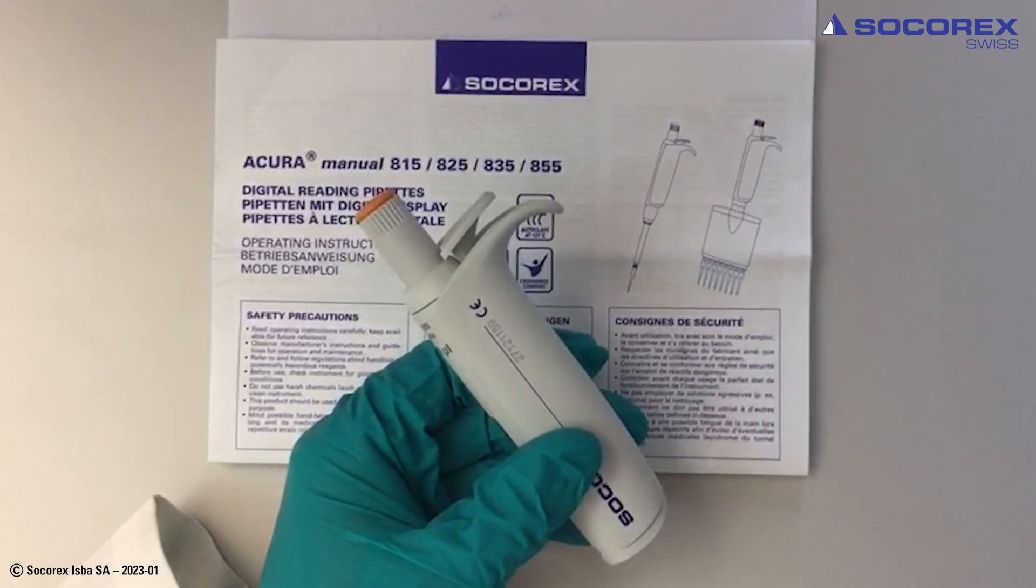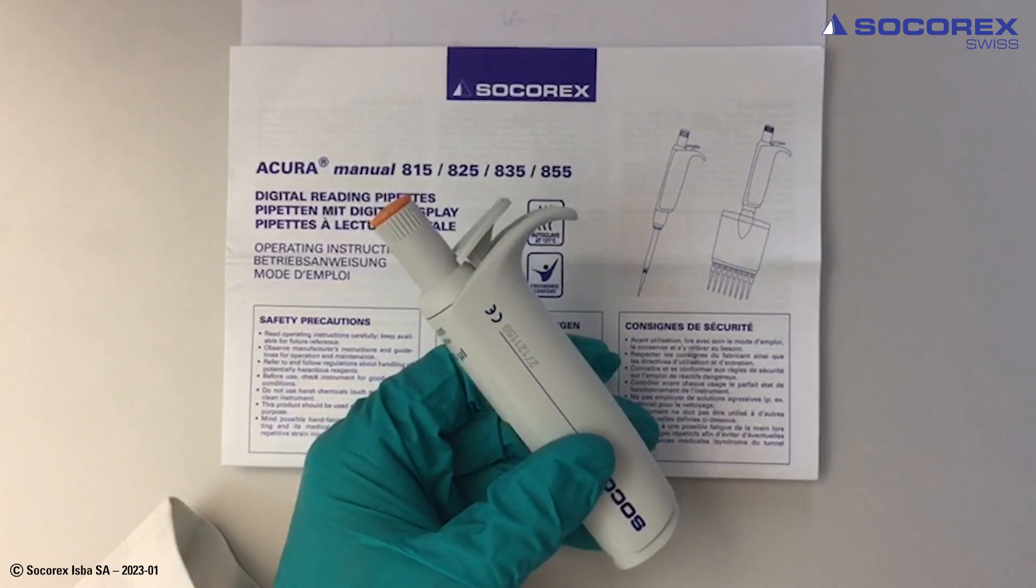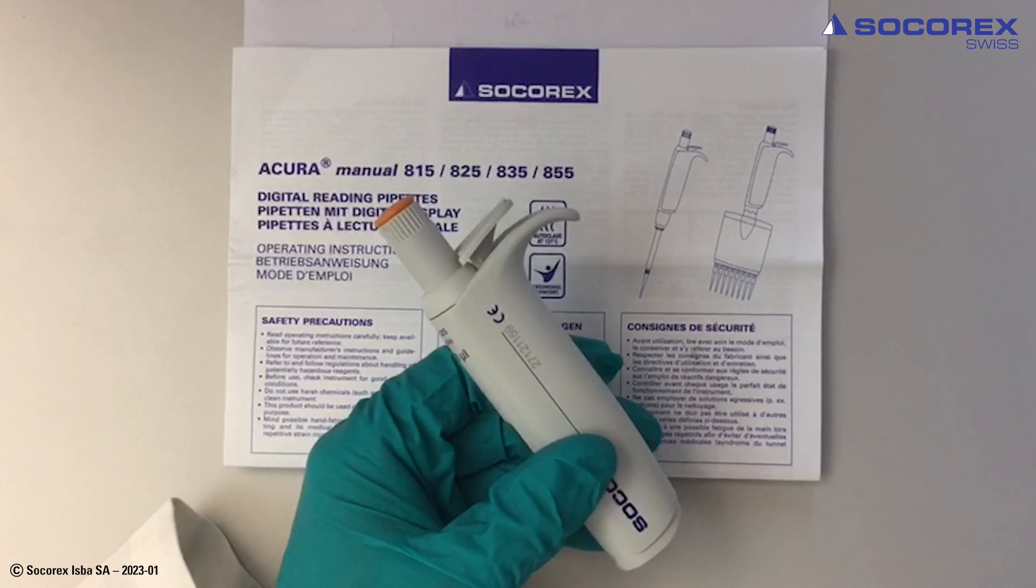Acura manual, valid for all Acura manual pipettes. This shows the removal of the internal tip ejector and counter assembly.